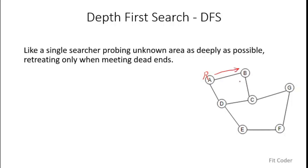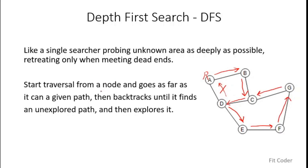He goes towards B. From B, he goes towards C because there is only one direction possible. From C, let's assume he goes towards D. From D, if he goes towards A, he will know he has already visited A, so he will not go there. From D, he goes towards E, then F, then G, and from G towards C. So we basically start from a node, go as far as possible on a given path, then backtrack until we find an unexplored path. From D he tried A — already visited, a dead end — so he backtracks and explores E, F, G, C. That is how DFS is done.